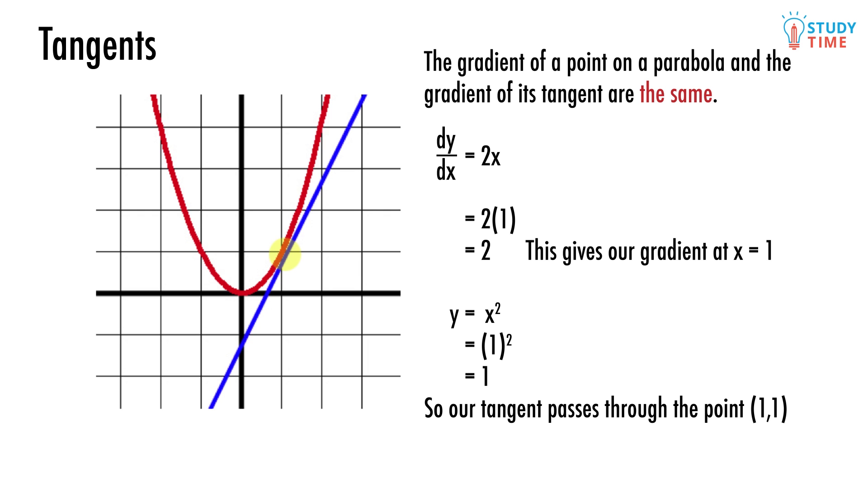We start with the plain equation of the parabola. This is the equation of the parabola and not the gradient. Now all we do is replace the x with a 1 once again to find the y value. y equals 1 squared equals 1.